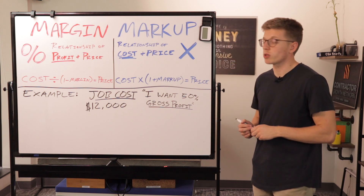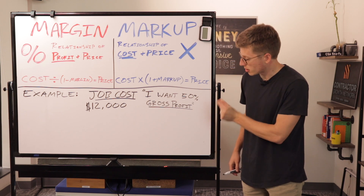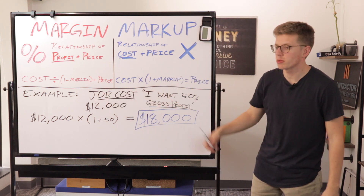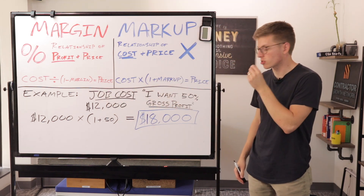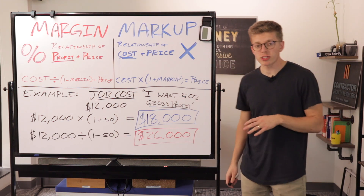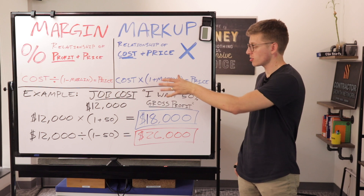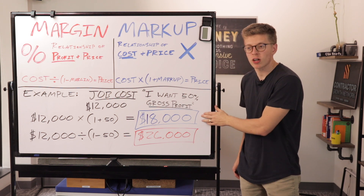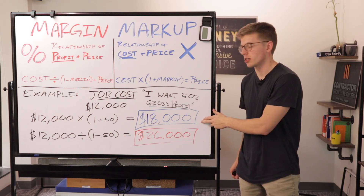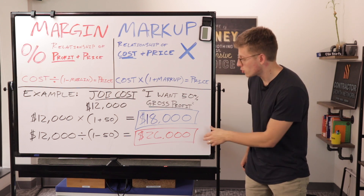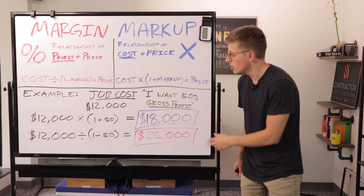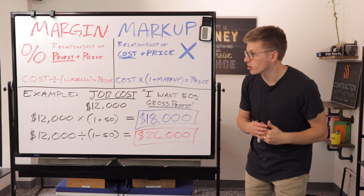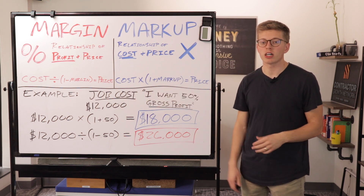He thought he was using the margin formula, but used the markup formula instead and got $18,000. If he had done it correctly, he should have charged more like $24,000. So he did the wrong formula, thought he was charging $18,000, and that's how he priced all of his projects for a year. When really, on every single one of those projects he should have been charging more like $26,000. That cost him $8,000 for each and every project, which over the course of the year ended up costing him a little over a couple hundred thousand dollars.